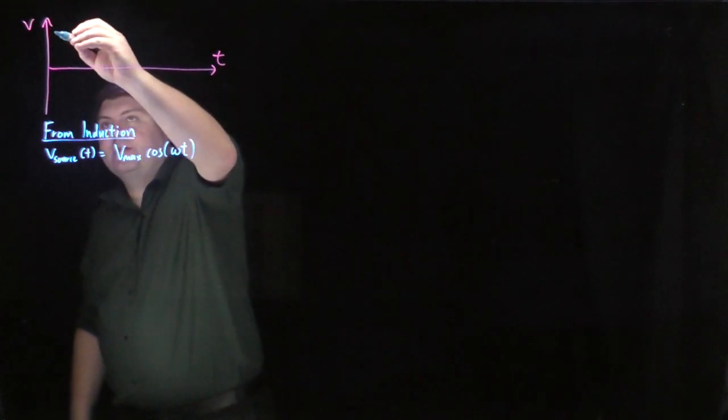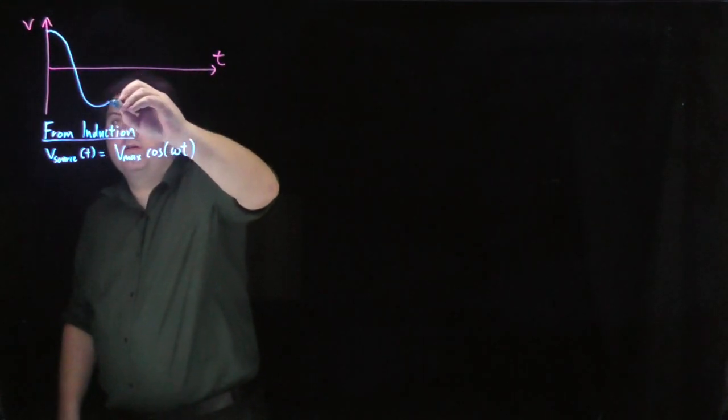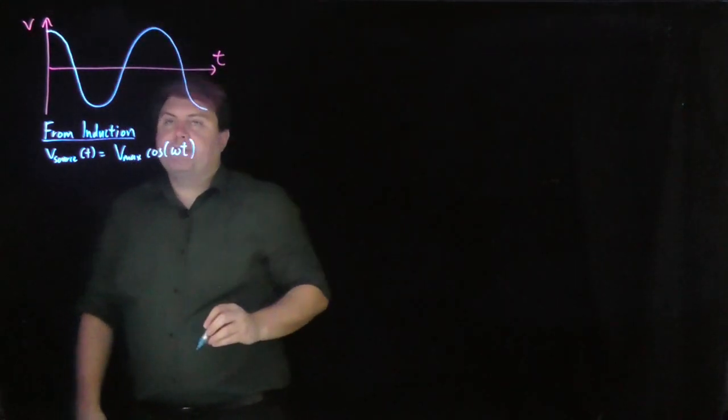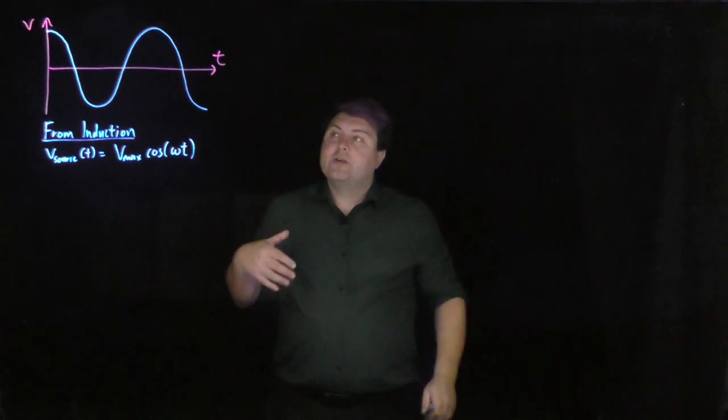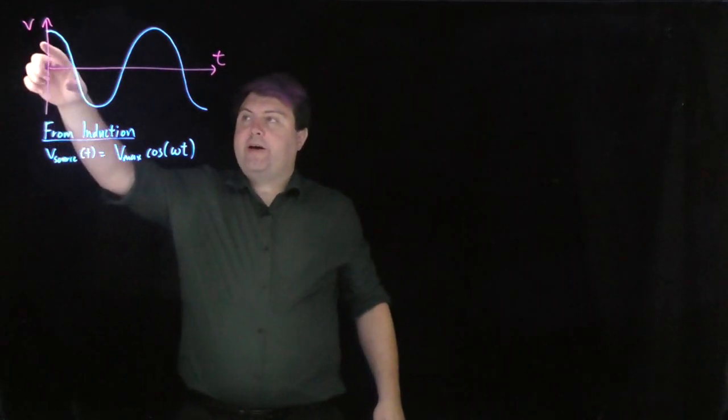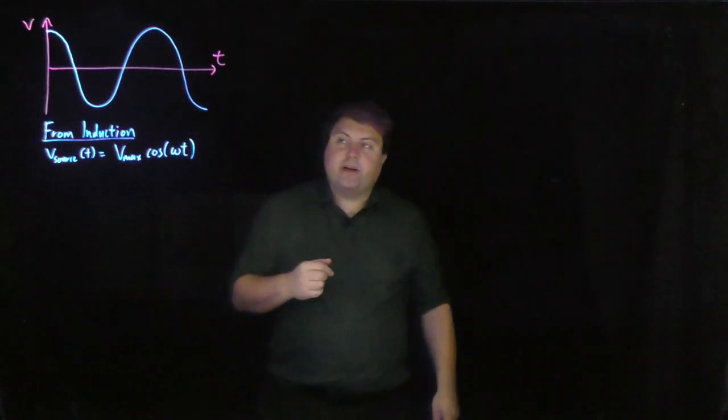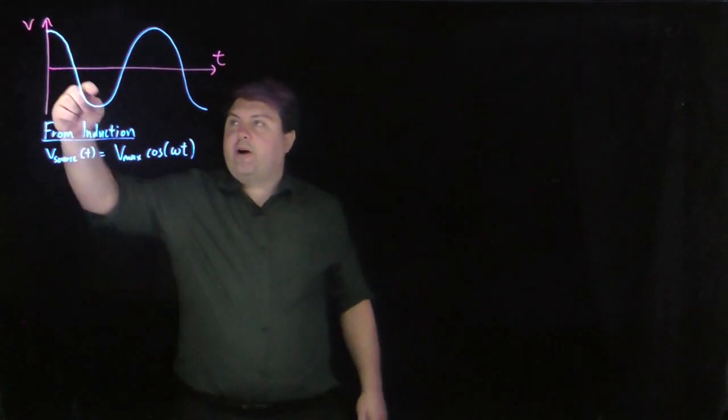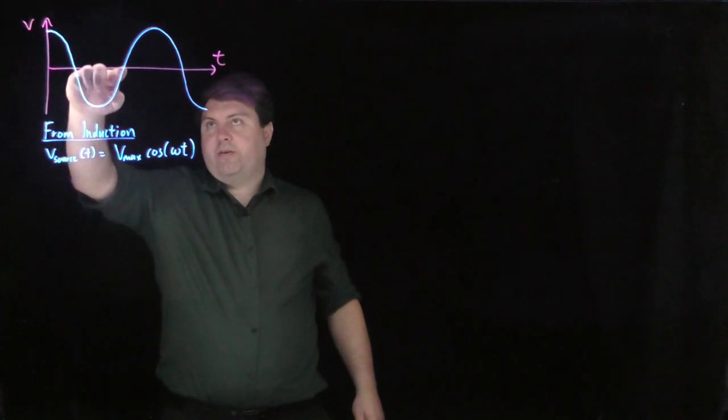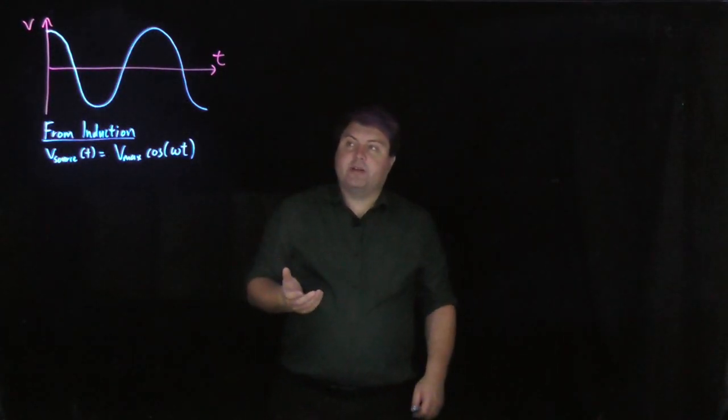If we want to draw this, it would look something like this. So our AC circuits are going to have an alternating voltage, an alternating current, as we're later going to see, from a positive Vmax to a negative Vmax. This is why we call this AC circuits.